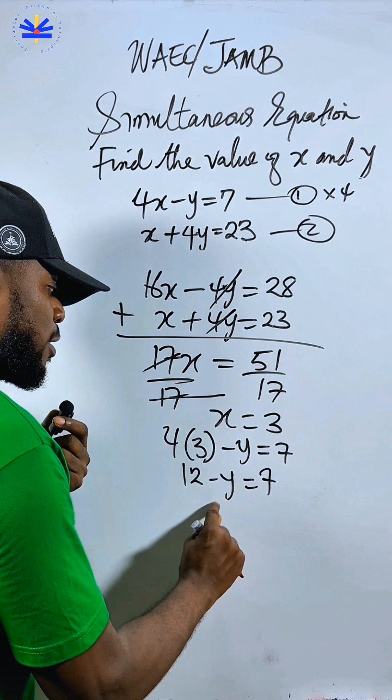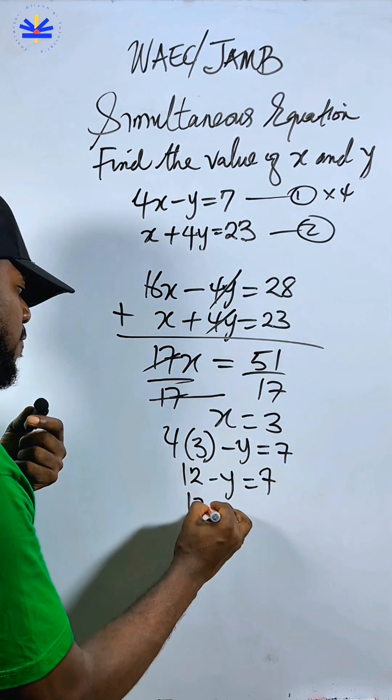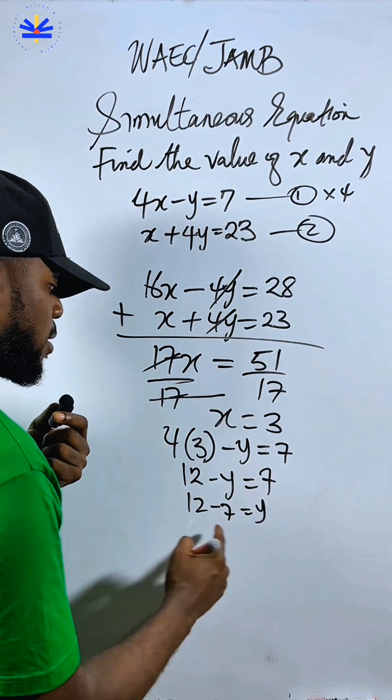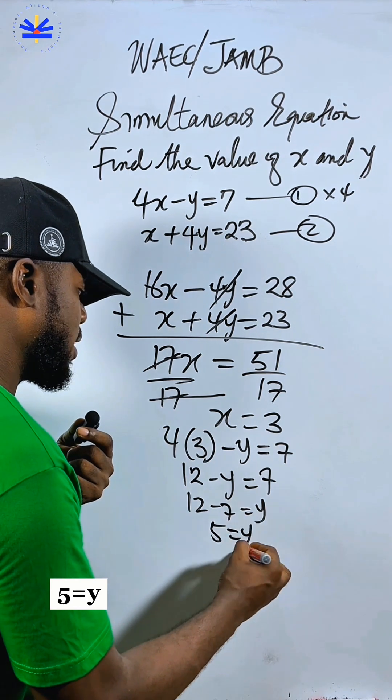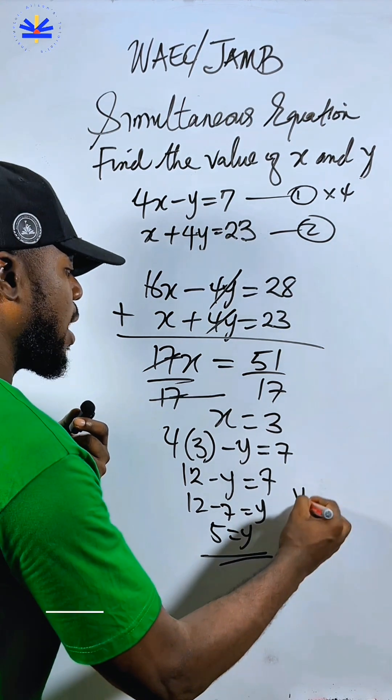Carry 7 will come where y. Carry minus y, cross to the other side. It can be 12 minus 7 equal to y. 12 minus 7 will be 5. 5 equal to y. That's the final answer. You get your y as 5, your x as 3.